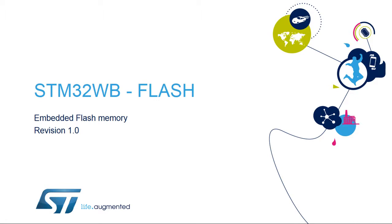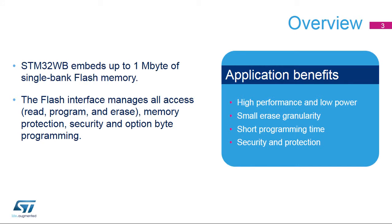Hello, and welcome to this presentation of the STM32L4 Flash Memory. All STM32L4 Flash features will be presented. The STM32WB embeds up to 1MB of single-bank flash memory. The flash memory interface manages all memory access, read, program, and erase, as well as memory protection, security, and option bytes. Applications using this flash memory interface benefit from its high performance together with low power access. It has a small erase granularity and short programming time.